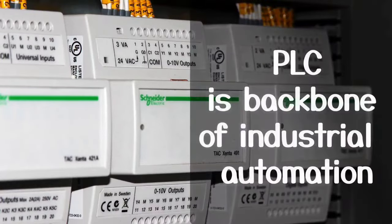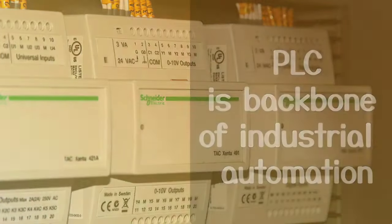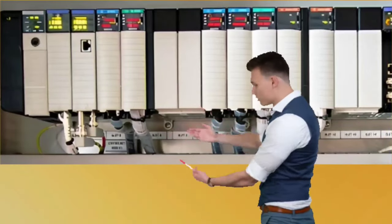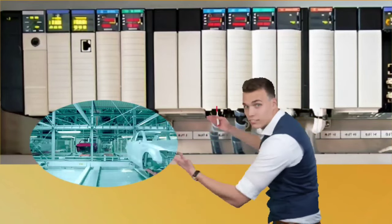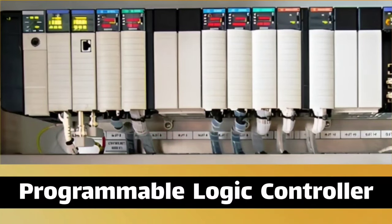PLC is the backbone of industrial automation. PLC is such a device which helps in automating machines and processes. PLC stands for Programmable Logic Controller.